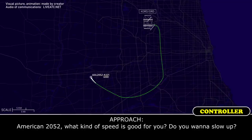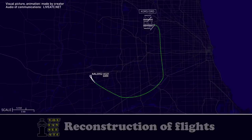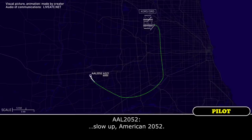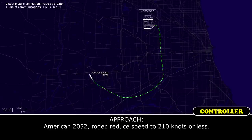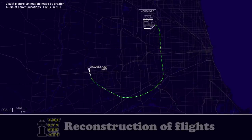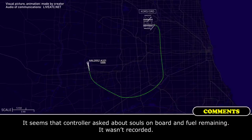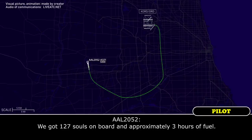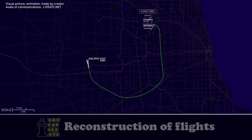American 2052, do you want to slow up? American 2052, roger, reduce speed to 210 knots or less. 210 or less, 2052. We've got 127 souls on board and approximately 3 hours of fuel. Roger.